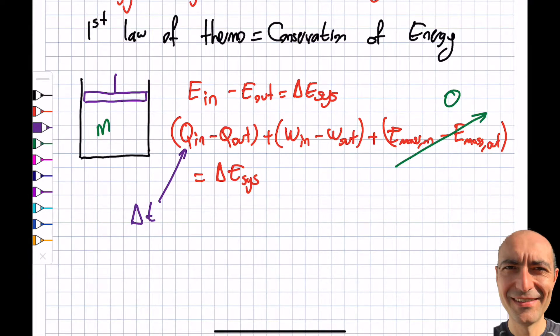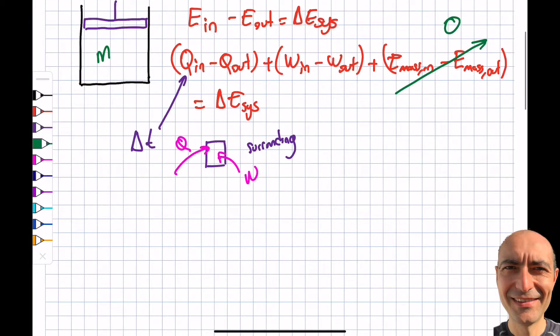Work is energy transfer across a boundary not due to temperature difference—basically everything else. I have my system and surrounding. I can have Q coming in, Q coming out, work in, work out. As long as this is related to temperature difference, I call it Q. If the energy transfer is not due to temperature difference, I call it work.